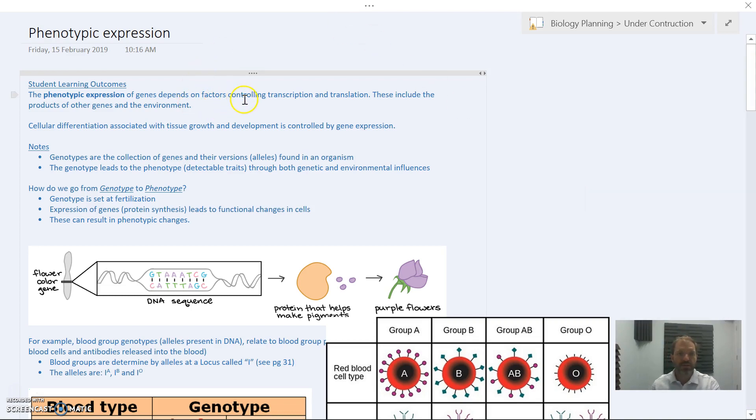Phenotypic expression of genes depends on factors controlling transcription and translation, part of protein synthesis. These are controlled by the products of other genes and the environment. By expressing different genes, cells differentiate and become specialized as part of the growth and development of an organism.